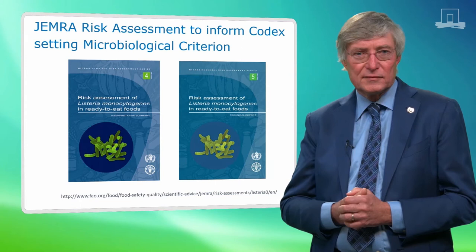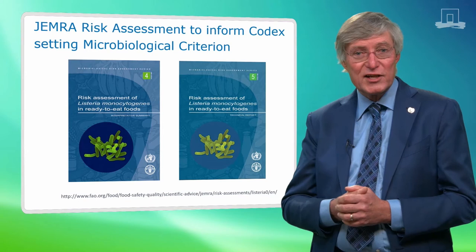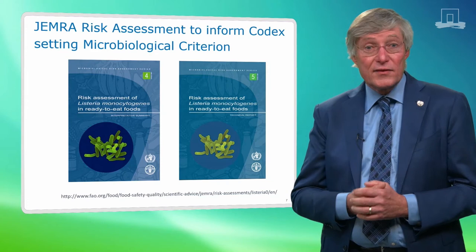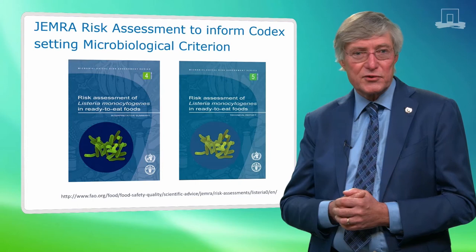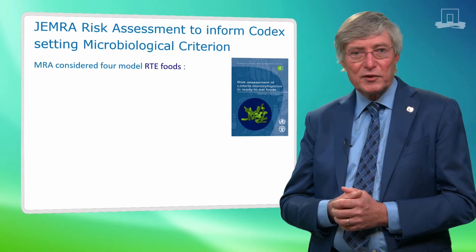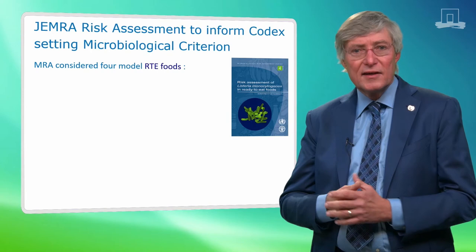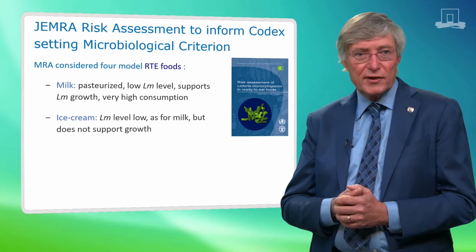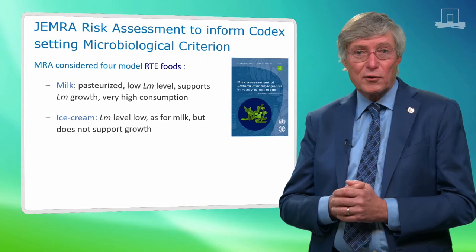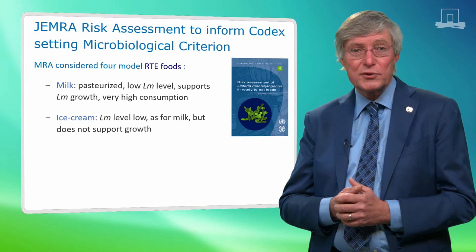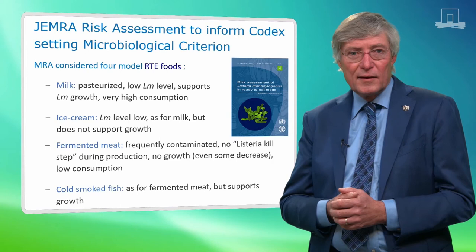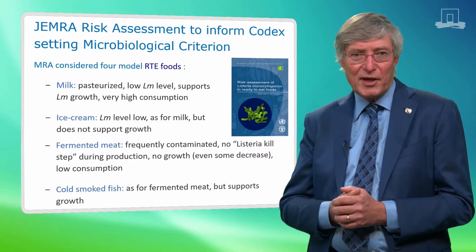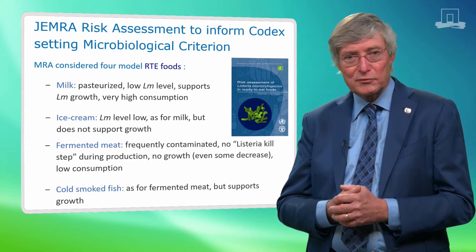This MRA was compiled by experts working under the umbrella of the Joint Expert Meetings on Microbiological Risk Assessment, or JEMRA. The JEMRA group published their investigation and findings in books 4 and 5 of the JEMRA reports series. In their risk assessment, the JEMRA group investigated four types of RTE foods in great detail. In pairs, these four types are considered representative of the range of RTE foods on the market. Pasteurized milk and ice cream are both pasteurized products in which LM levels are typically low; milk supports growth of the pathogen and is consumed a lot, while properly frozen ice cream does not support LM growth. Fermented meat and cold smoked fish are infrequently consumed but frequently contaminated with LM; fermented meat does not support growth of the pathogen, while cold smoked fish does.